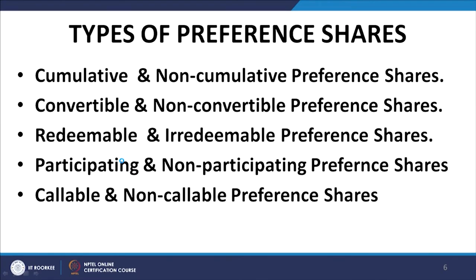Then we discussed the types of preference shares. We discussed cumulative and non-cumulative preference shares, convertible and non-convertible preference shares which can be converted to equity shares as per the terms of issue. Cumulative preference shares are those shares on which if dividend of a particular year is not paid, then that is carried forward to subsequent years. In other words, the arrears of dividend are not extinguished in the year to which they relate but they get carried forward.